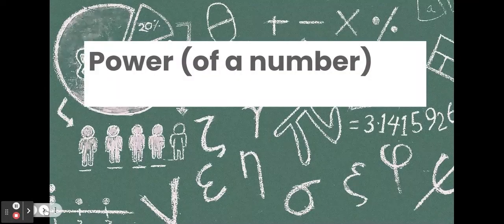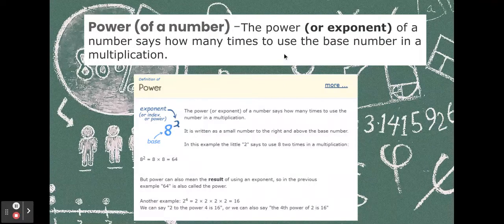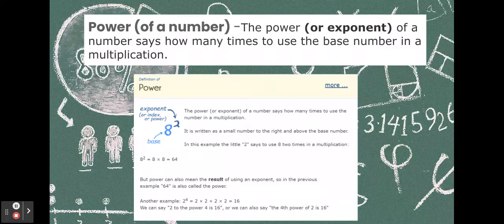What's the power of a number? The power of a number, or exponent of a number, says how many times to use a base number in a multiplication. So, the power of a number, we can see this diagram, tells us how many times to multiply 8. And we see 8 to the power of 2, we multiply 8 twice. So, the power of a number tells us how many times to use a base number in multiplication.